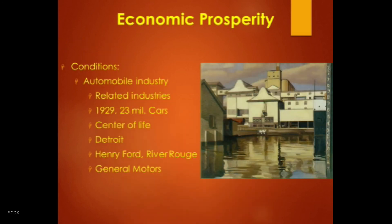Leading the way in the 1920s was the automobile industry, which transformed the country much as the railroads had done after the Civil War, and as televisions and computers would do in later years. It was not only the automobile itself that transformed the nation and economy — cars drove dozens of other major industries, from rubber and metal to gasoline, road construction, roadside restaurants, street signs, and stoplights. Some four million Americans were employed by industries associated with the automobile, and by 1929 about half of all American families owned at least one car.